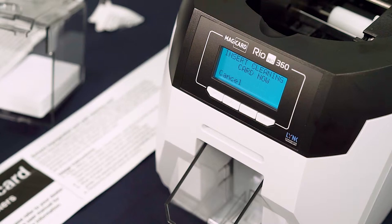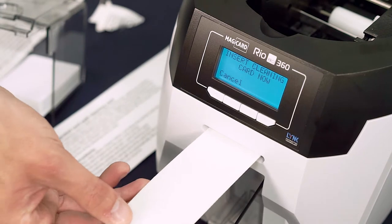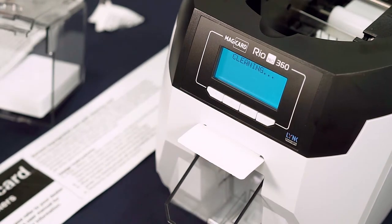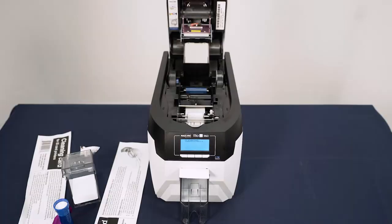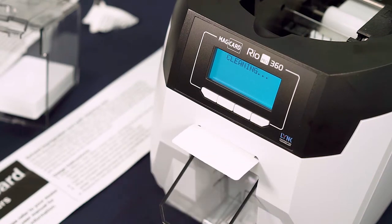The rollers inside the printer will automatically start turning and the display will show insert cleaning card now. Insert the card narrow end first through the slot under the display at the front of the printer. The rollers will pull the card inwards and the display will say cleaning. The card will eject and reinsert itself a number of times. The machine will then eject the whole card once the process is complete.